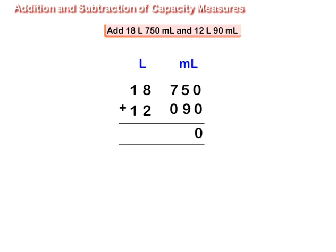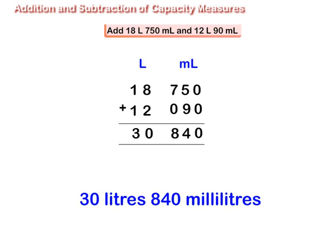Add milliliters to milliliters and liters to liters like whole numbers. The sum is 30 liters, 840 milliliters.